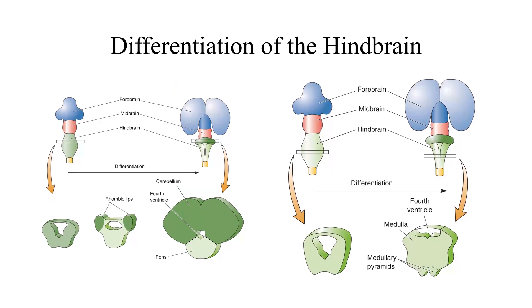The hindbrain differentiates into three important structures: the cerebellum, the pons, and the medulla oblongata, aka medulla. The cerebellum and pons develop from the rostral half of the hindbrain, called the metencephalon. The medulla develops from the caudal half, called the myelencephalon. The CSF-filled tube becomes the fourth ventricle, which is continuous with the cerebral aqueduct of the midbrain.